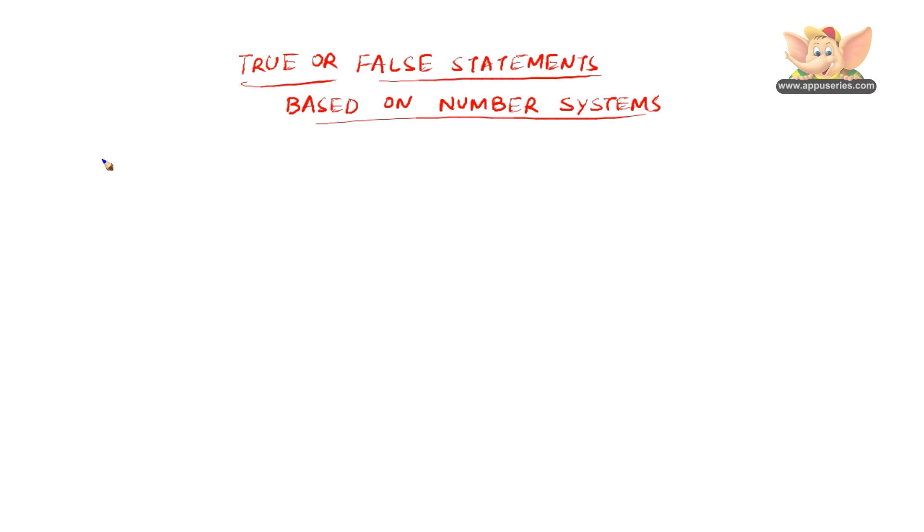Let us now check out some true or false statements based on number systems. Every whole number is a natural number. What do you think? Is this true or false? Take a second. Before we come to a conclusion, let us try to analyze this statement.